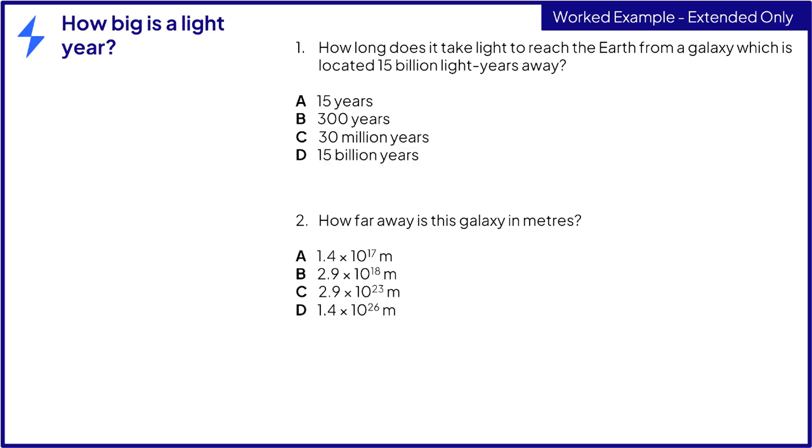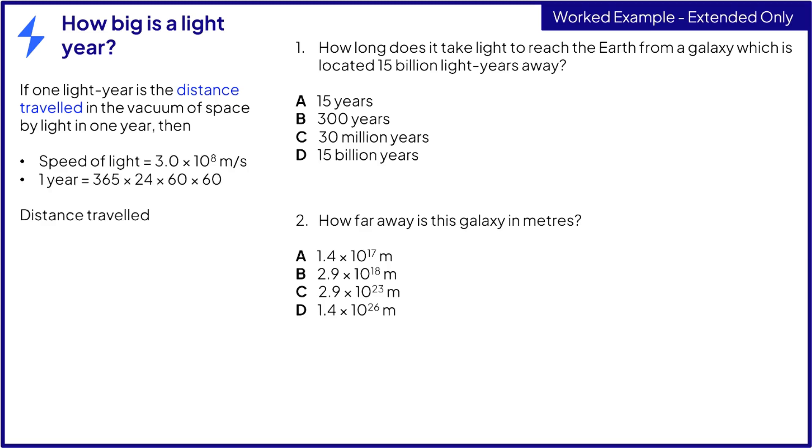If you're taking the extended paper, you'll need to be able to use the conversion between a light year and meters in calculations. If one light year is the distance travelled in the vacuum of space by light in one year, then using the values for the speed of light and the number of seconds in one year, we find the distance travelled by light in this time is equal to speed times time.